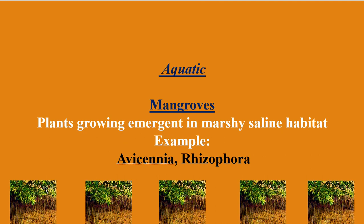Mangroves are plants which prefer to grow on marshy saline land. An example is Avicennia. This is the picture which contains the Avicennia tree. Mangrove forest trees possess a special character called breathing roots, because marshy land contains poor aeration. To balance the aeration, the root system is modified to produce erect vertical aerial roots containing holes called breathing pores, which are meant for gaseous exchange.